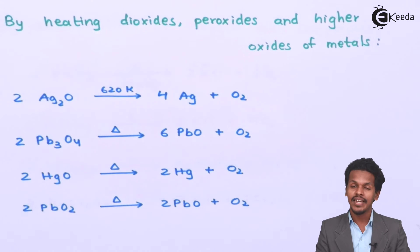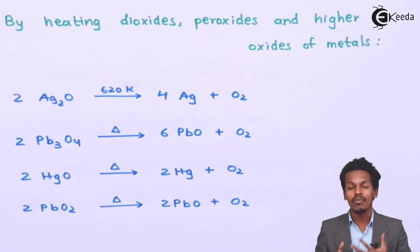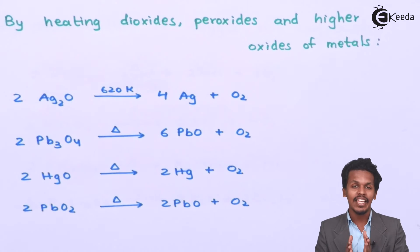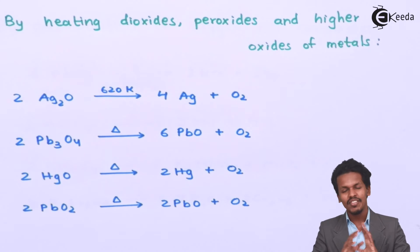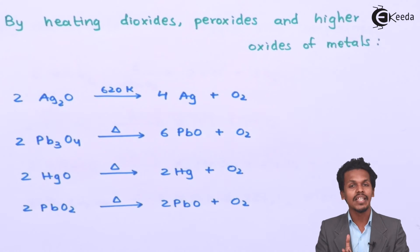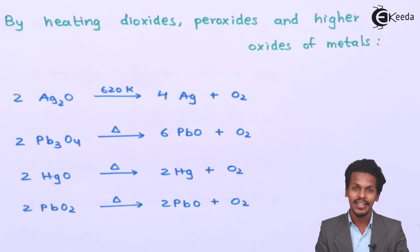Another method is electrolysis of H2O. When water is electrolyzed, we obtain H2 as well as O2. So in that case also we could obtain oxygen. These were the certain reactions where we have come to know how oxygen is basically prepared.